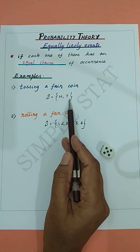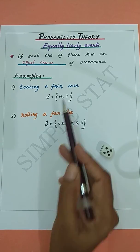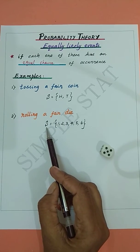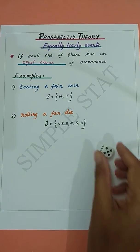Similarly, in rolling a fair die, the sample space is given by S = {1, 2, 3, 4, 5, 6}. We know that there are six faces when we roll a die, hence all six faces are equally likely events.